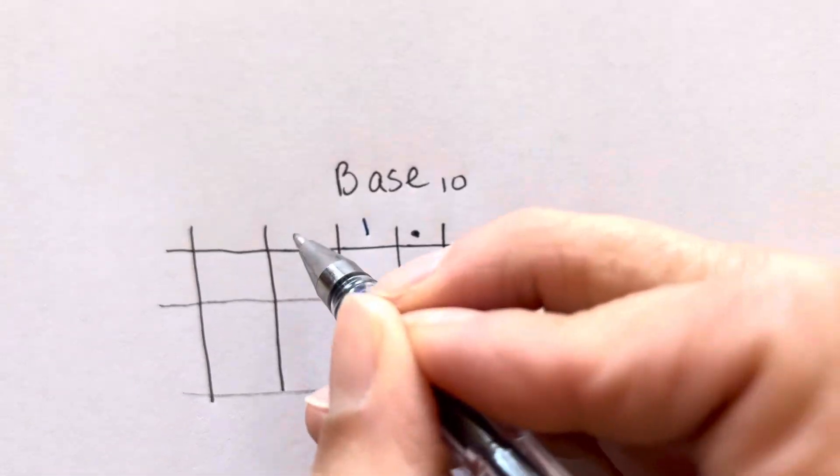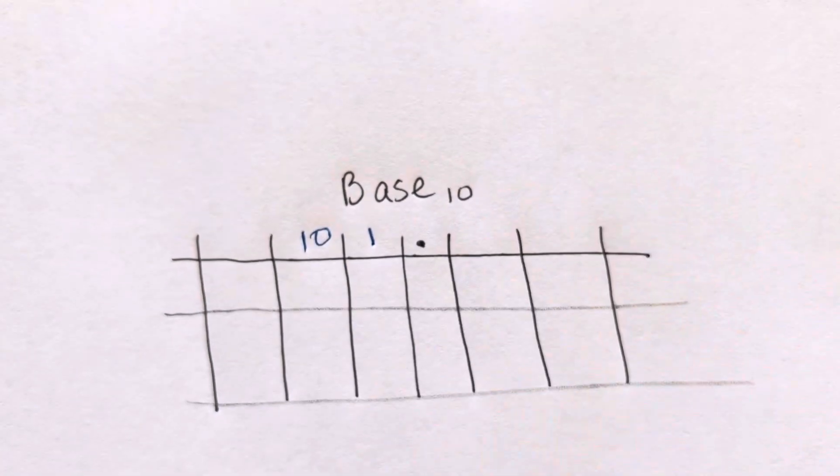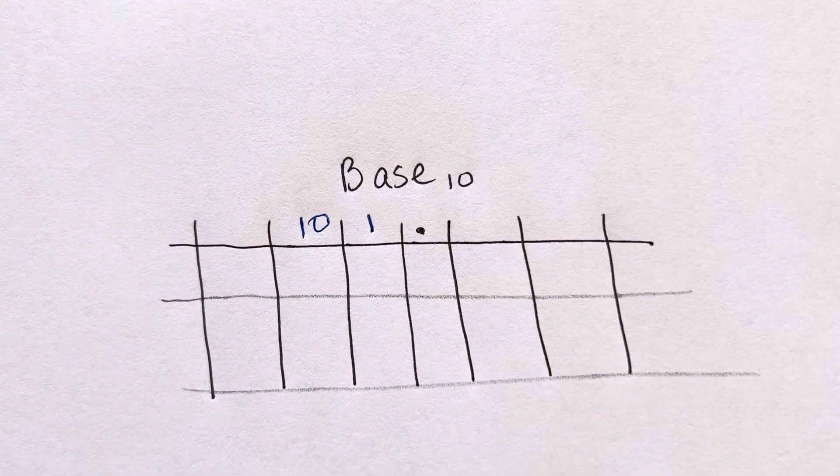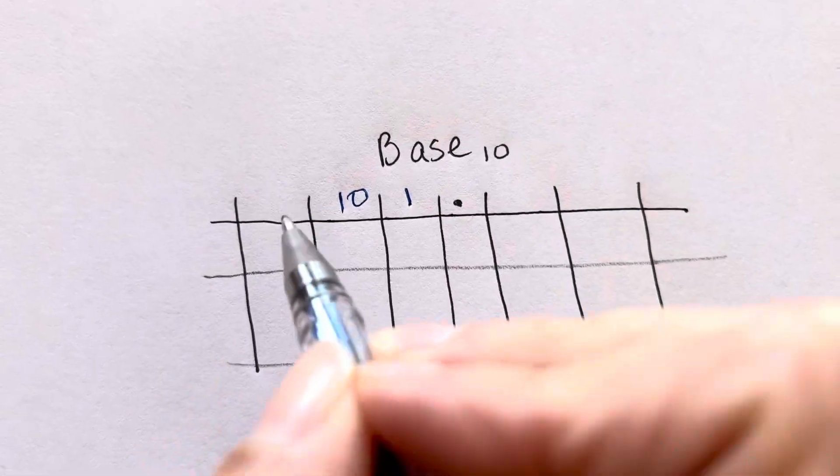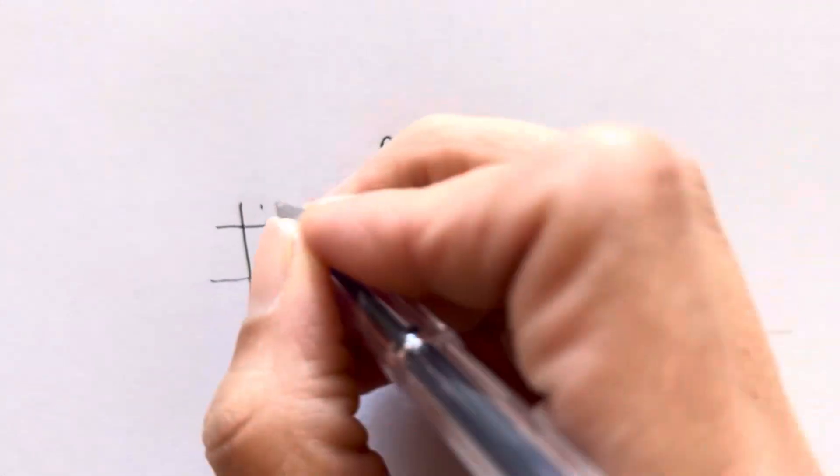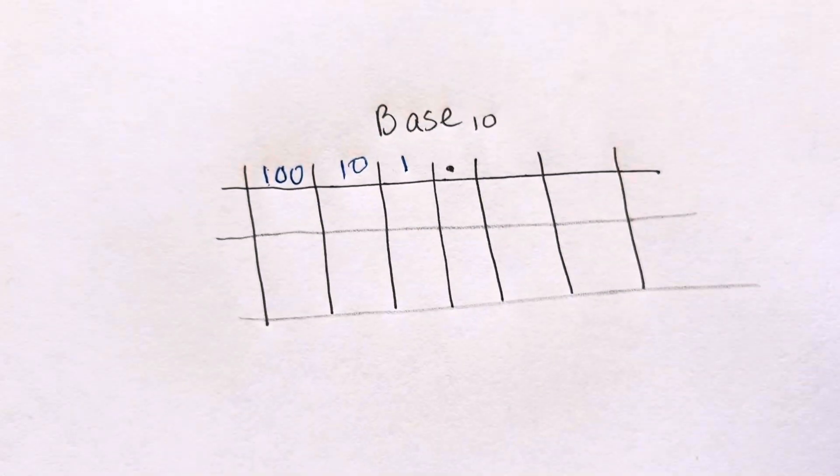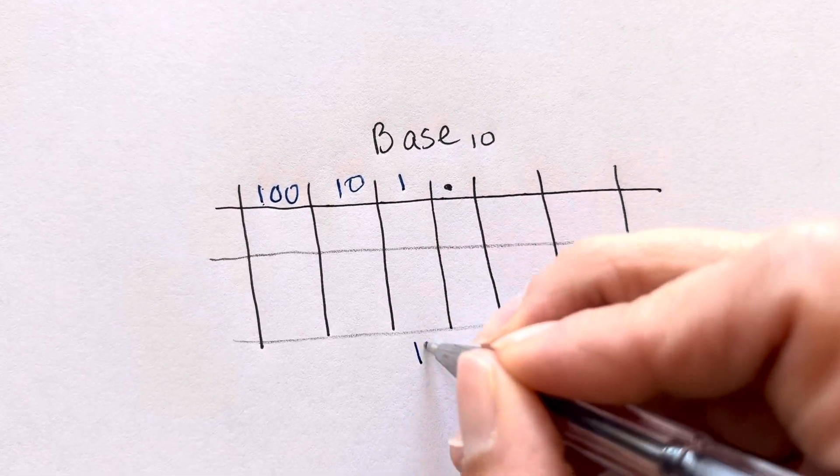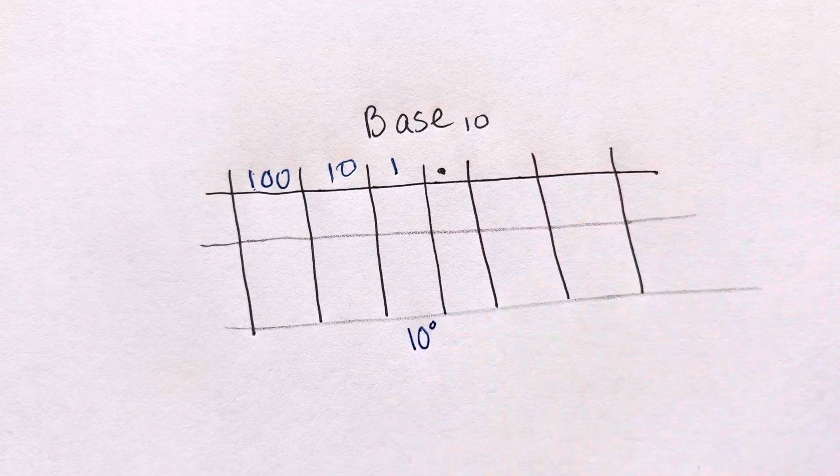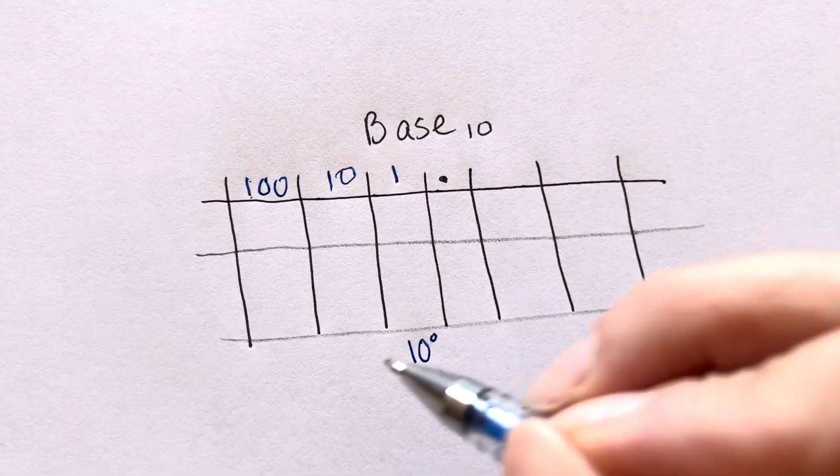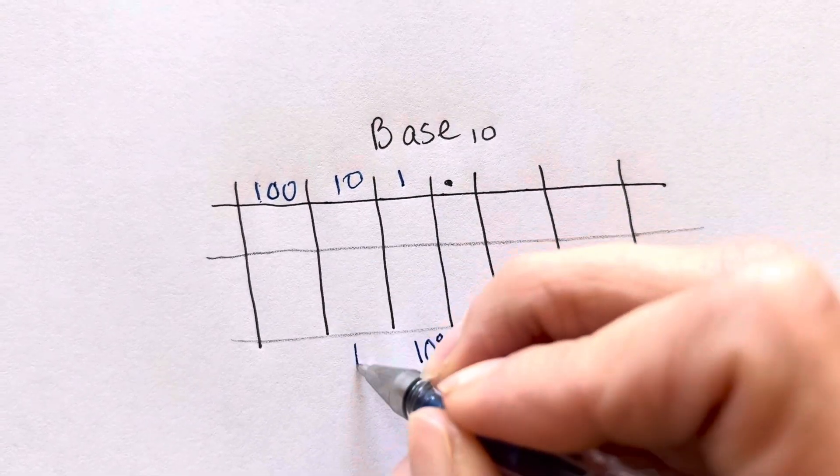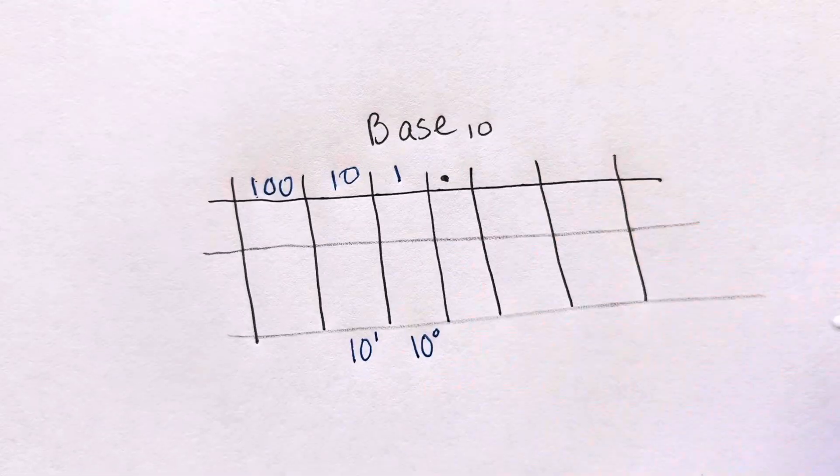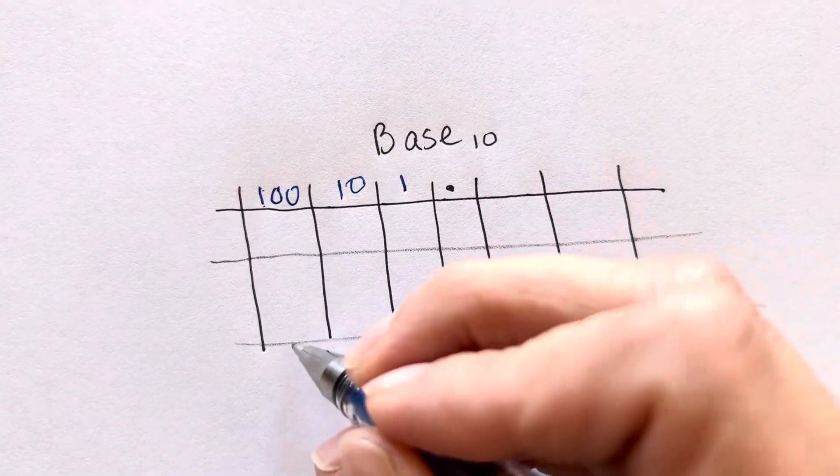So let's explain a little bit more about how base 10 works. This first column includes the ones, the second column has the tens, and then the next column we have 100. The one is the same as saying 10 with an exponent of 0, this 10 column is the same as 10 when the exponent is 1, and this column is 10 when the exponent is 2.